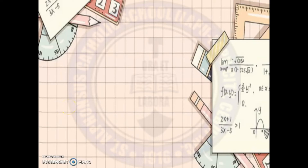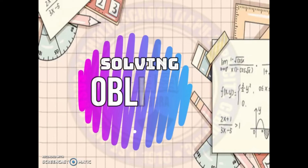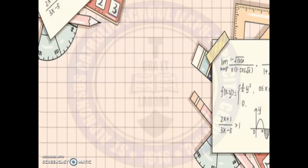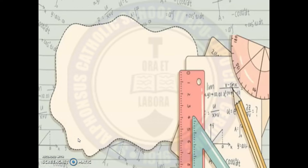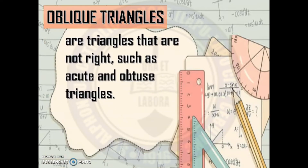Good day, Grade 9 Math Learners! For today, we're going to learn about solving oblique triangles. What is an oblique triangle? Oblique triangles are triangles that are not right, such as acute and obtuse triangles.